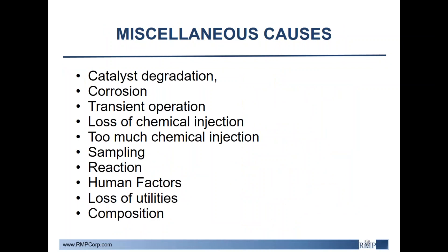Finally, there are several miscellaneous causes the team should discuss after reviewing the common causes. These could include catalyst degradation, corrosion, transient operations such as startup, shutdown, and maintenance, loss of chemical injection or too much chemical injection, sampling issues, or anything involved in the reaction — too much reaction, too little reaction, or any side reactions that could occur. Additionally, you want to touch on any human factors that could lead to risk, loss of utilities, any composition issues, and anything else the team comes up with.